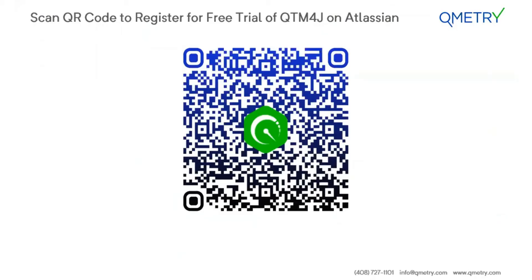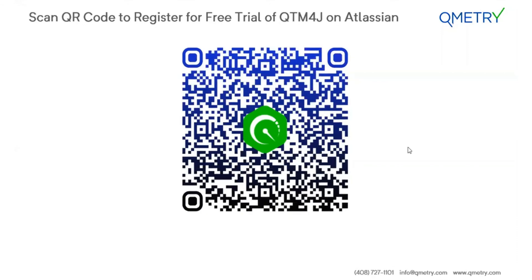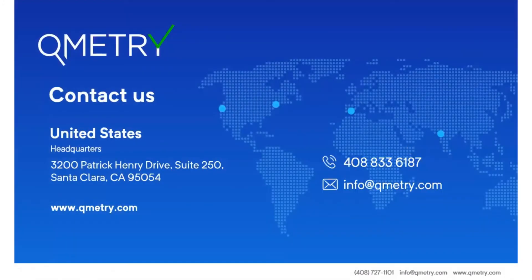Thanks for watching this video. I hope you really liked all the powerful functionality offered by Qmetry for Jira in terms of authoring. If you would like to explore Qmetry for Jira, you can scan this QR code and download Qmetry for Jira from the Atlassian Marketplace. You can reach out to us at 408-833-6187. Thank you so much. Bye-bye.